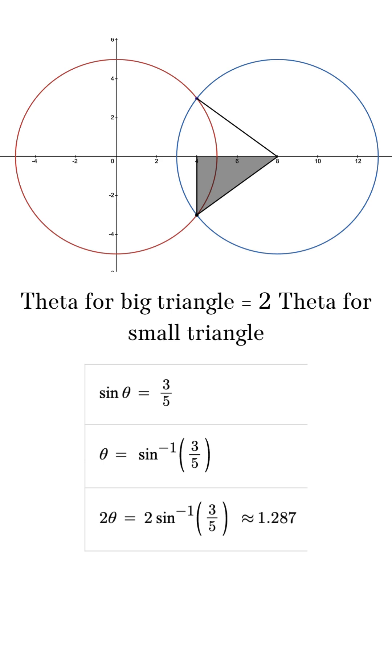So, the theta of the big triangle is equal to 2 times the theta of the small triangle, so that, after doing some trigonometry, is going to be 1.287.